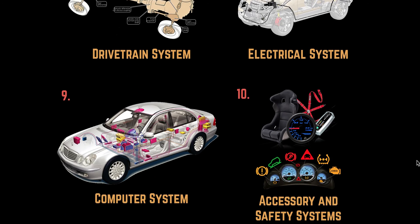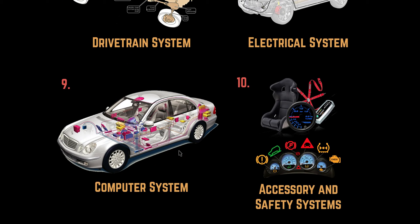Number nine: the computer system. This monitors and controls various vehicle systems. It uses electrical devices to monitor and control various systems, including the fuel, ignition, drivetrain, safety, and the security system as well.